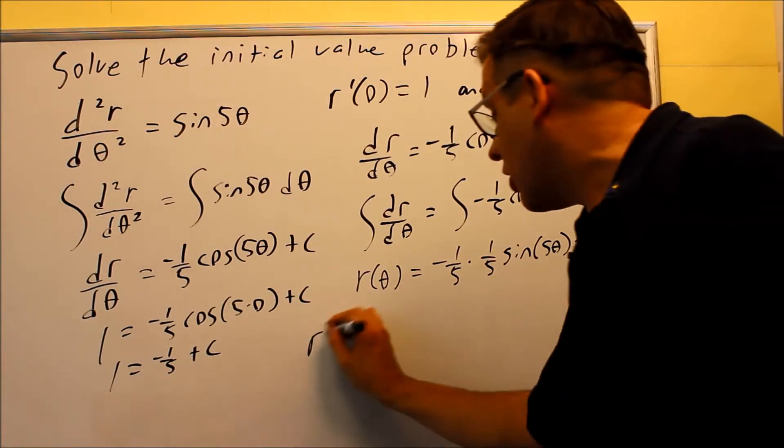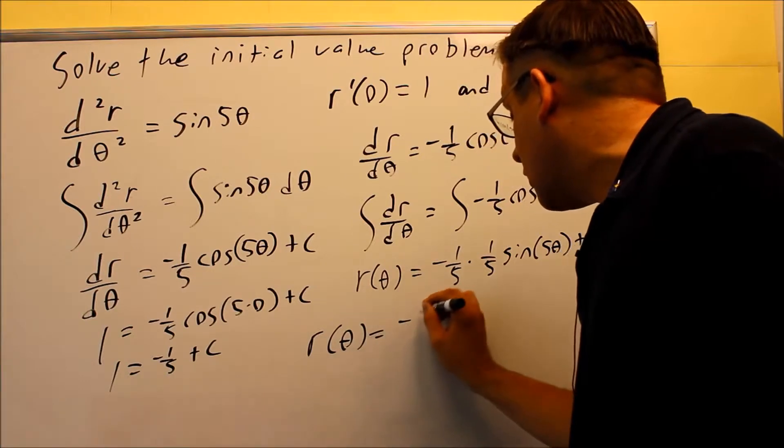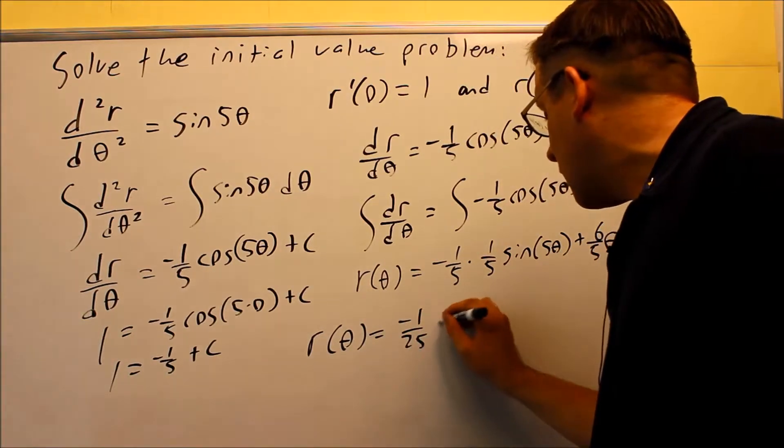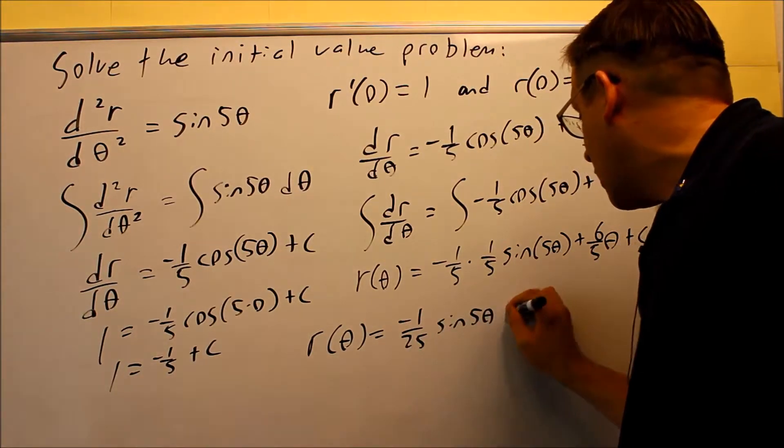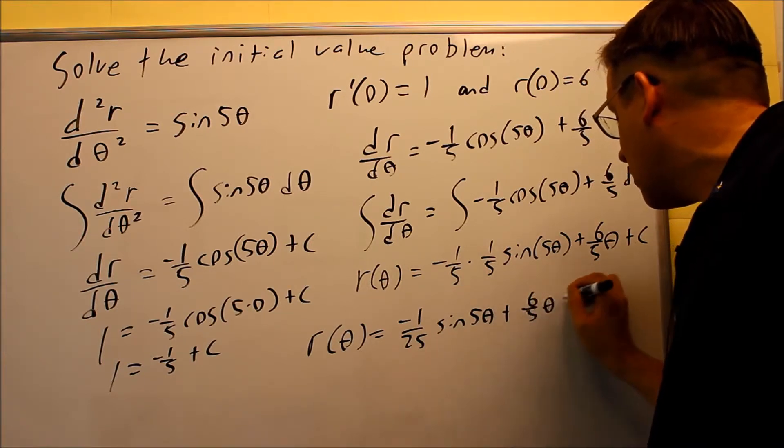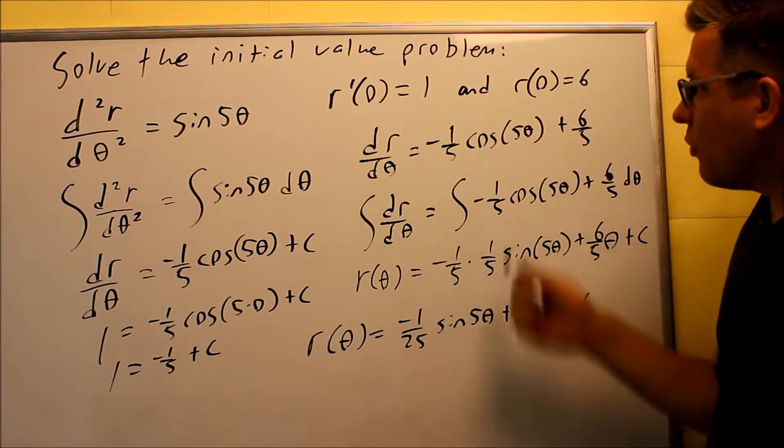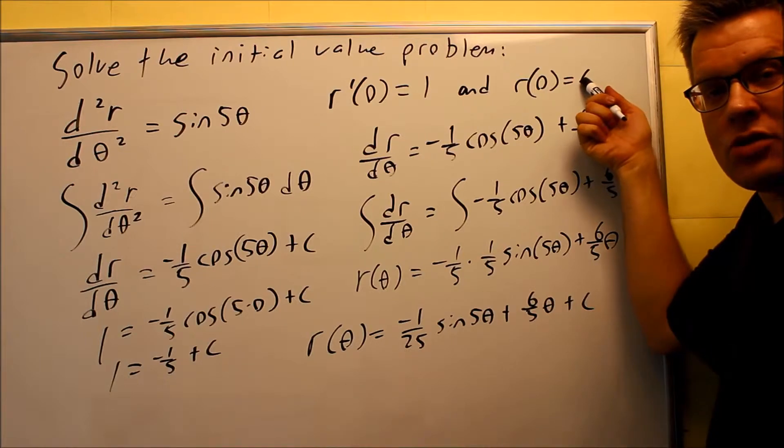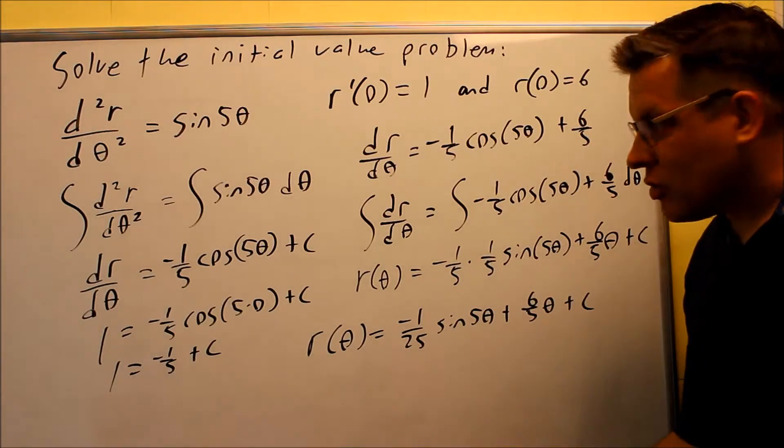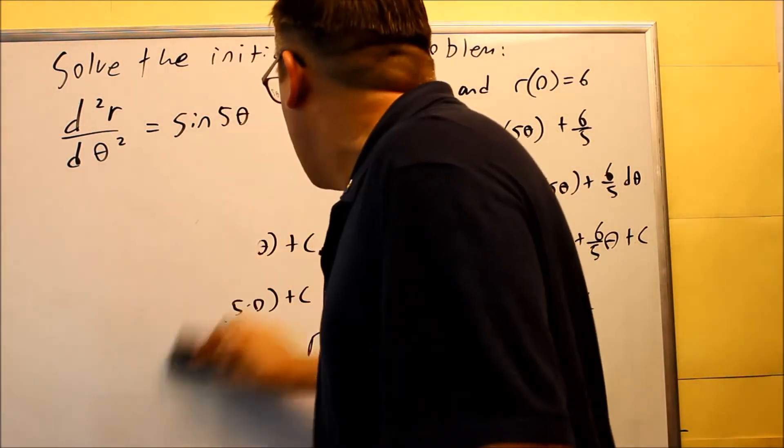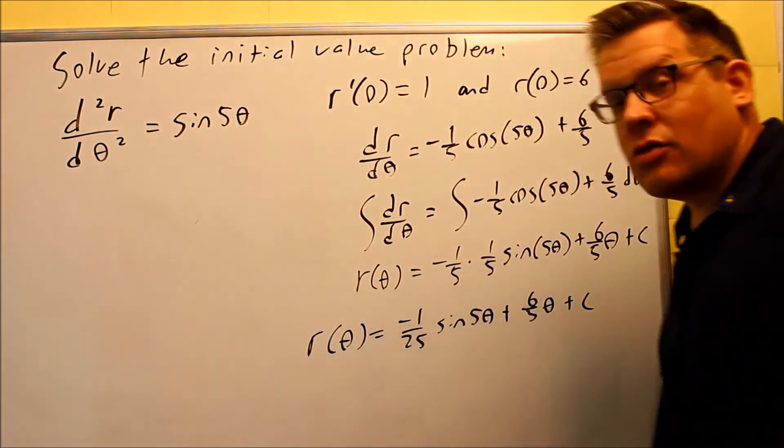So finally, we can say that r(θ) is negative 1/25 sine of 5θ plus 6/5 θ plus c. And then we're just going to put this last piece of information in here: r(0) equals 6. Do that over here, and we'll be able to get our exact solution.